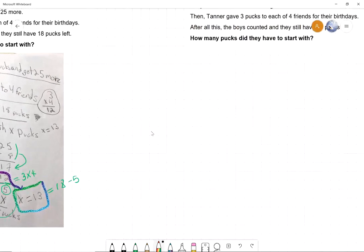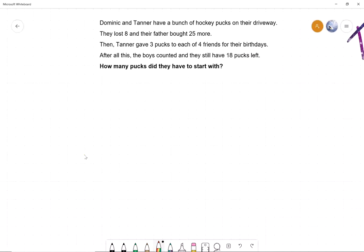Okay, very good. So let me do it again, but now I'm going to do it my way, which is actually very similar to what you guys did. Okay, so I represent everything with my equation. So whenever I read that Dominic and Tanner have a bunch of hockey pucks, immediately a bell rings in my head and I think that must be the mystery number. That must be my variable. So I'm going to write X for the bunch of hockey pucks that are in the driveway. Then...